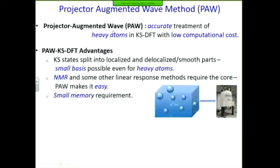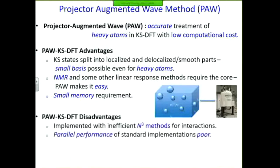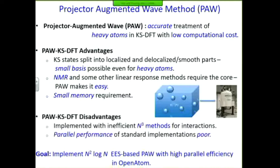Another good thing about PAW is that it gives direct access to core states, so you can get core-state information when needed. The bad thing is that it doesn't parallelize well and the parallel performance of existing codes is quite poor. So our goal here is to implement a plane-wave-based PAW with good parallel performance in OpenATOM.